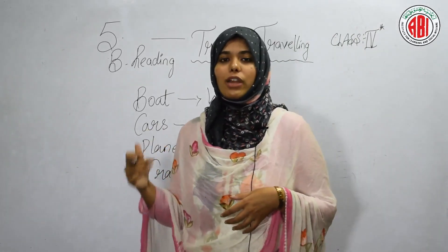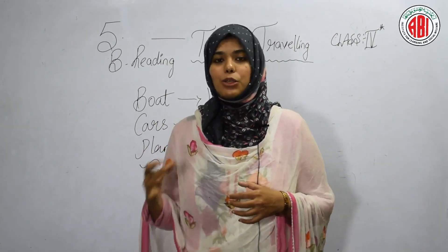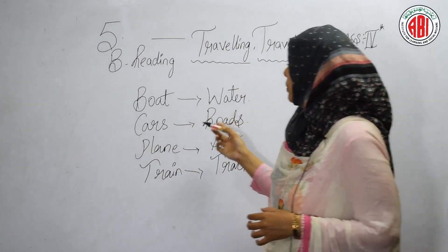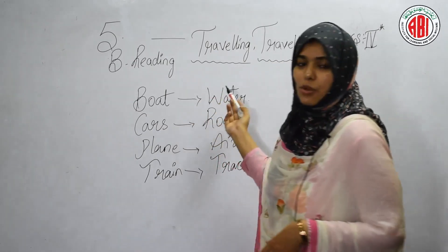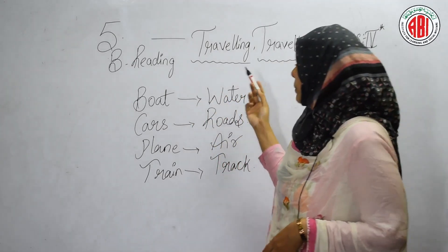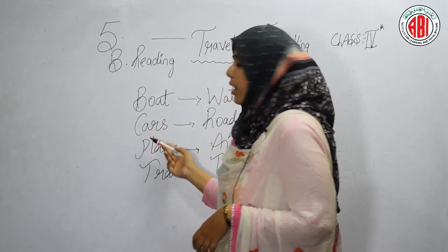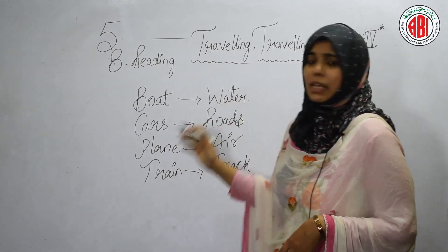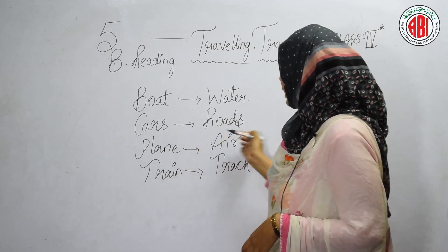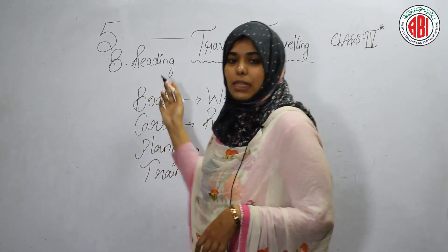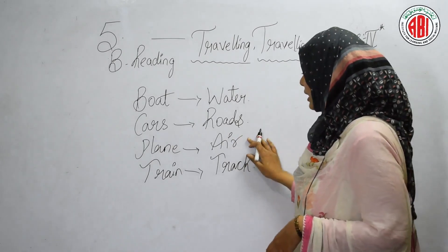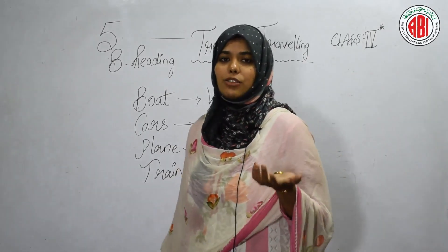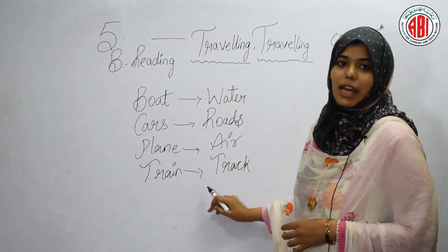So what are the different modes of transportation people use for traveling? That is what this poem is telling us about. People may travel by boat, which flows on the water. People can use cars for traveling, which ride on the roads. People can use the plane to travel through the sky. And most passengers can travel by train, which runs on the railway tracks.